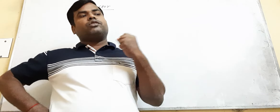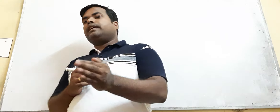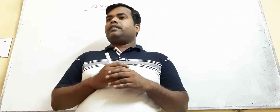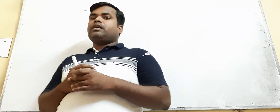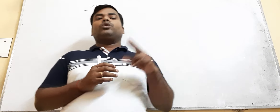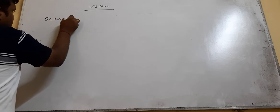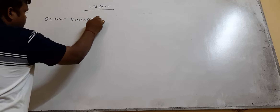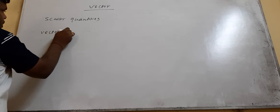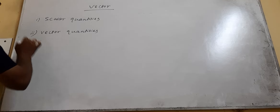In these physical quantities, some quantities have only magnitude and some quantities have both magnitude and direction. So depending upon direction, we classify these quantities into two types: scalar quantities and vector quantities.